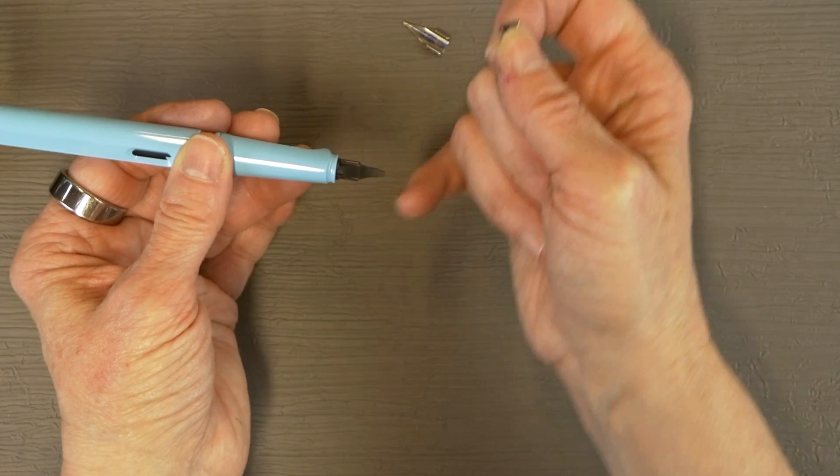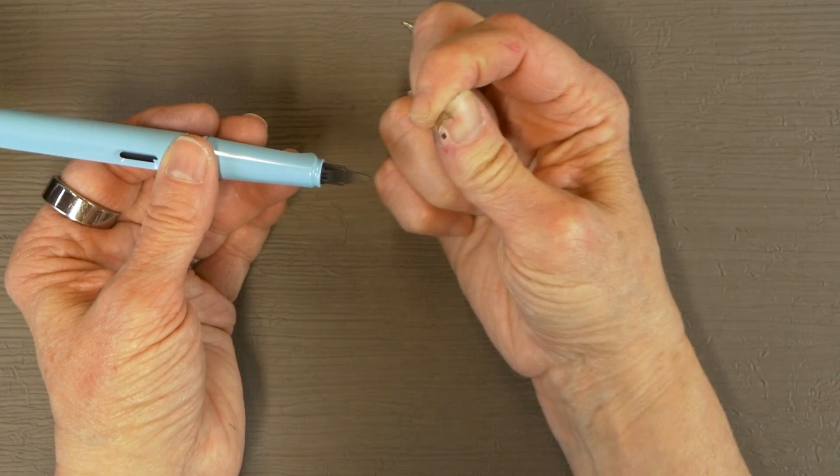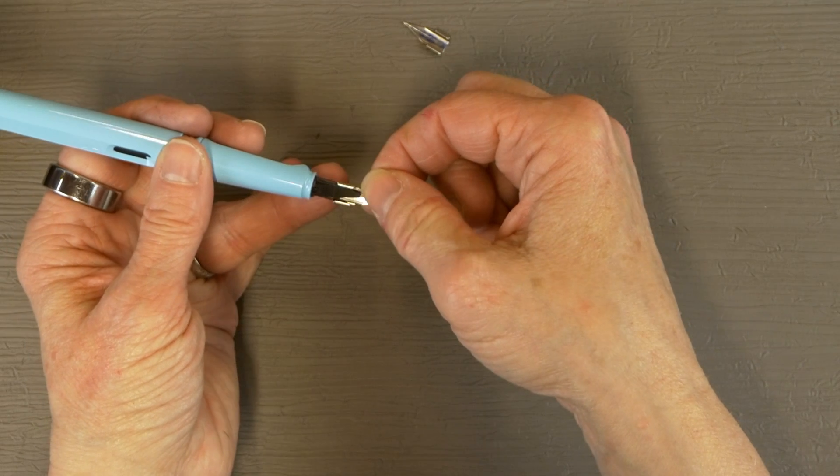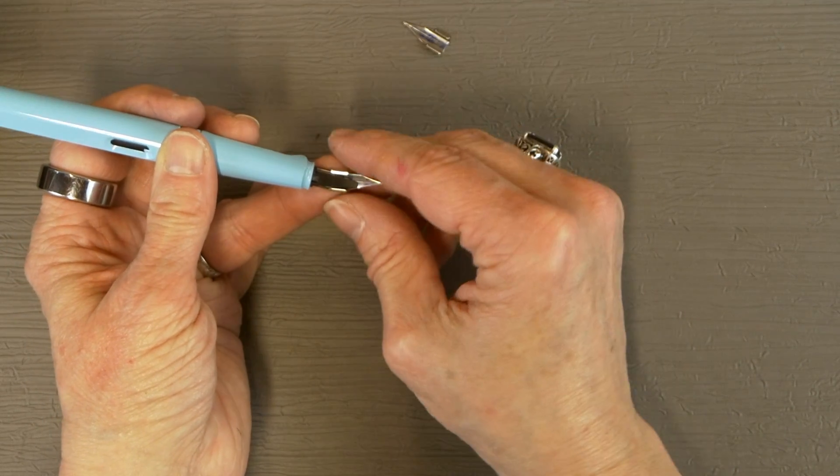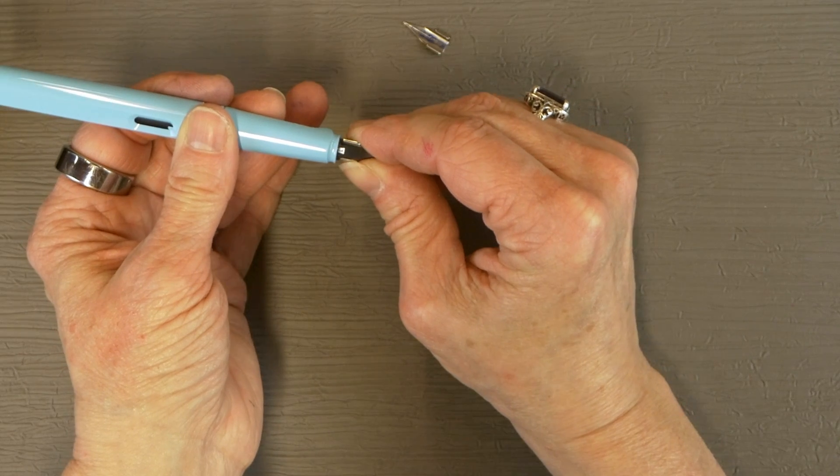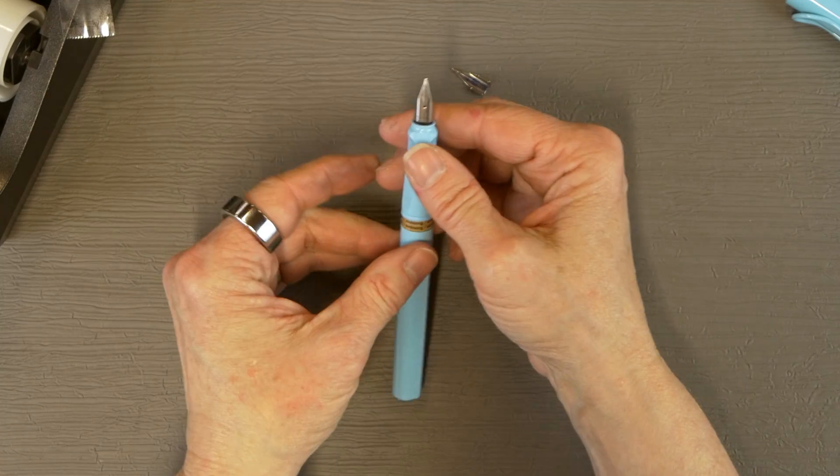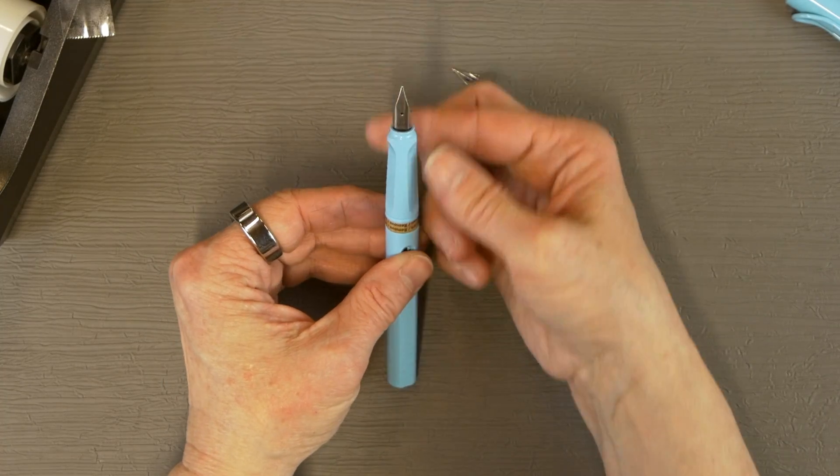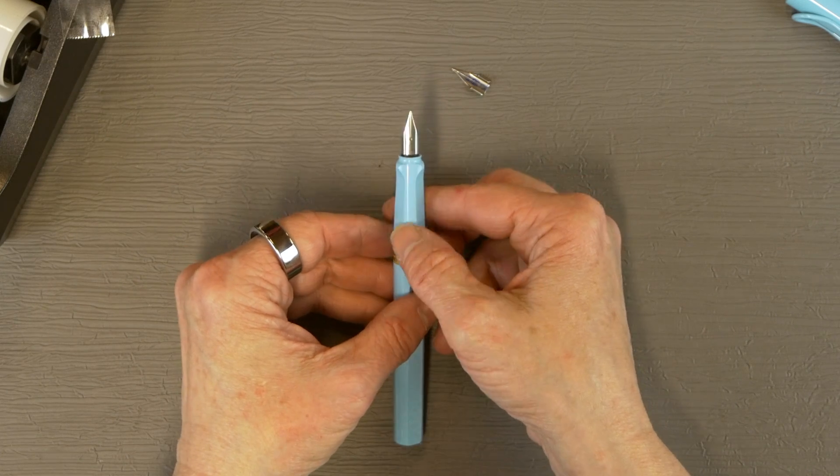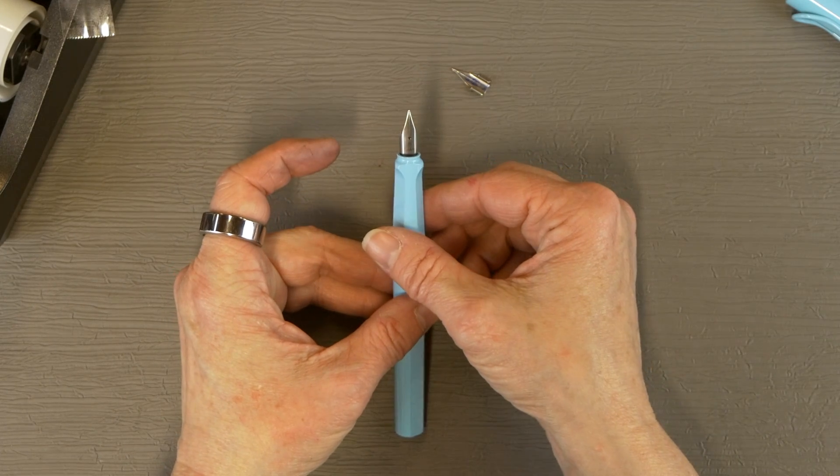The nib unit sits on these little rails right here, and it has little grooves. I like to be able to see what I'm doing, so I just line it straight up, push it on, turn it over, make sure it's on all the way, and that truly is all you need to do.